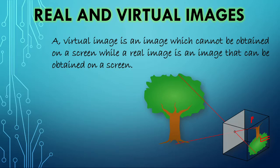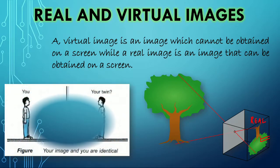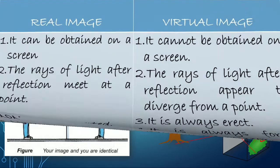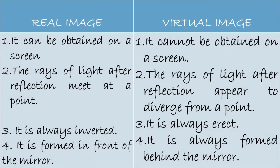This image is a real image. But when we look into the mirror, we see an image forming behind the mirror. We know that there is no actual screen at the back side of the mirror. Thus, the image obtained on the plain mirror is not real, it is virtual. A virtual image is an image which cannot be obtained on the screen, while a real image is an image that can be obtained on a screen.